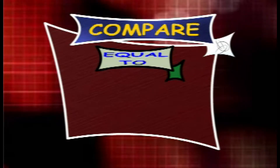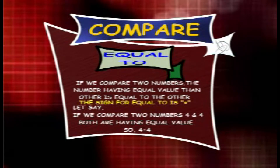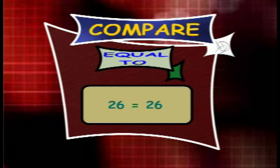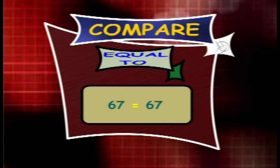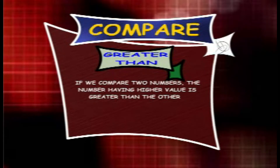Equal to: if we compare two numbers having equal value, they are equal to each other. The sign for equal to is =. For example, 4 is equal to 4, 26 is equal to 26, 33 is equal to 33, 67 is equal to 67, 46 is equal to 46, 78 is equal to 78.